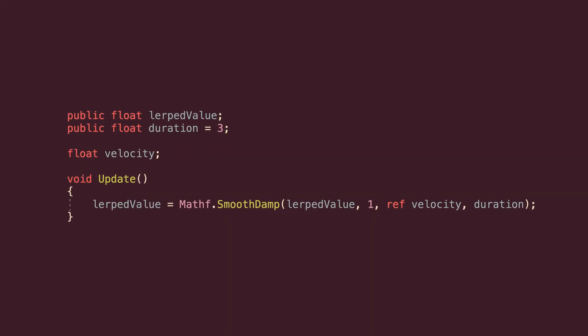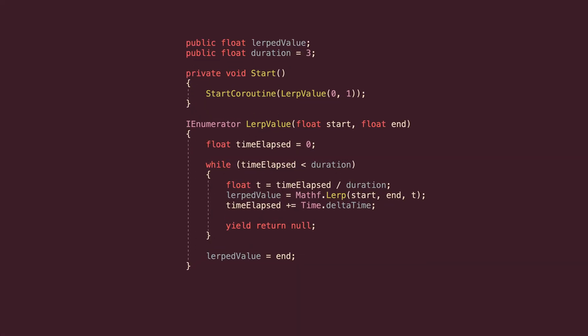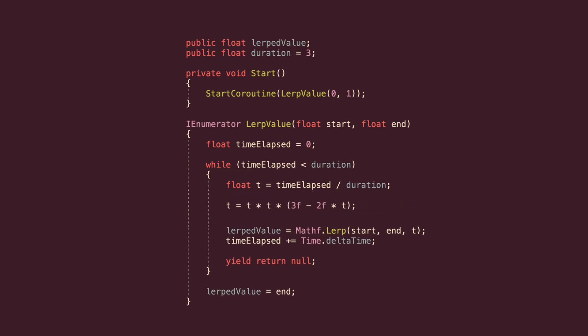SmoothDamp is particularly useful when chasing a target value that's always changing, as the function takes the value's current velocity — how fast it's changing right now — as well as the remaining distance from the target into consideration. As a result, it's often used to create a follow camera, where the speed of the camera may need to change based on the speed of its target, keeping it in view. Or, if you still want to move a value on a fixed time scale like you normally would with Lerp, but don't want the rate of change to be linear, it's possible to calculate a curve directly into the t value, such as a smooth step curve, for example.